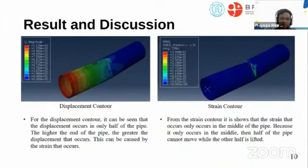For displacement contour, it can be seen that the displacement occurs only on half of the pipe. The higher the end of the pipe, the greater displacement that occurs. This can be caused by strain that occurs. From the strain contour, it can show that the strain that occurs only in the middle of the pipe.